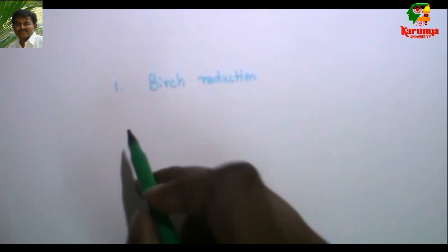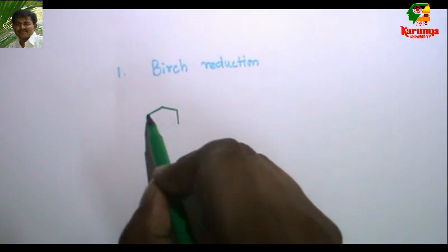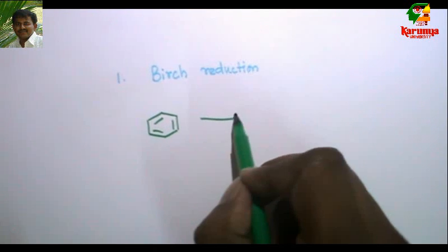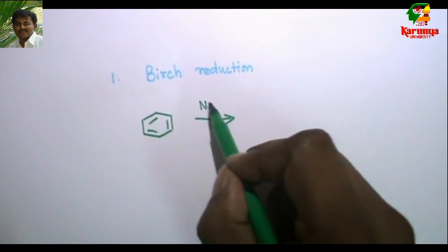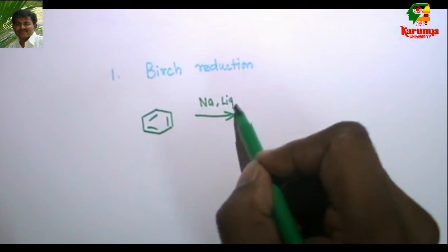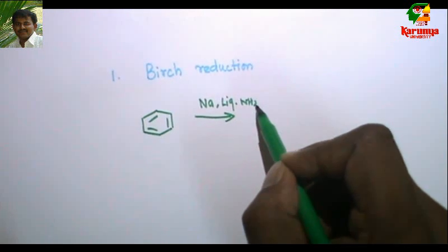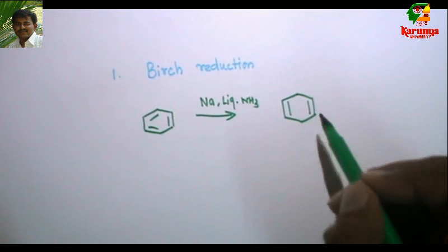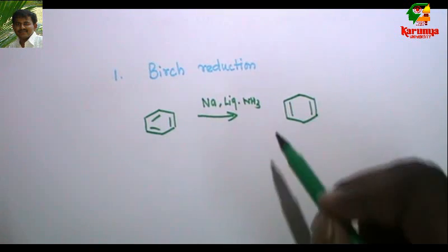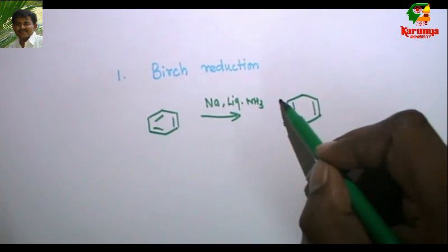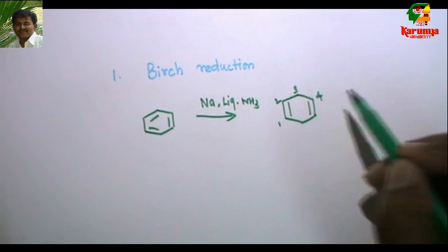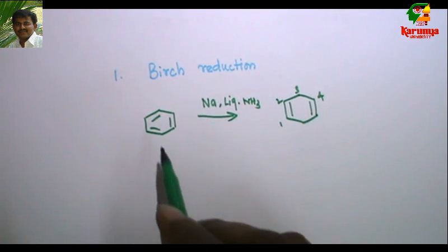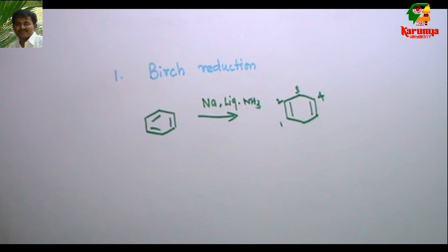In Birch reduction, the aromatic system is converted into a 1,4-diene. This is the simple system with benzene — no problem there.